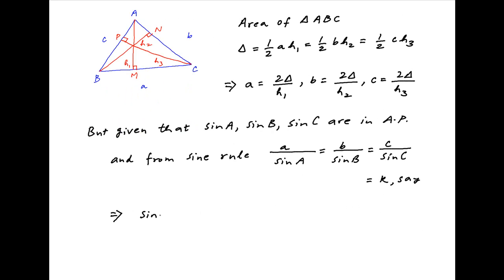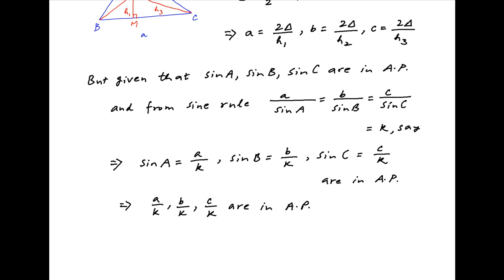Therefore, sine A is equal to a upon k, sine B is equal to b upon k, and sine C is equal to c upon k, and we are given that these three terms are in arithmetic progression. Therefore, a upon k, b upon k, and c upon k are in arithmetic progression.